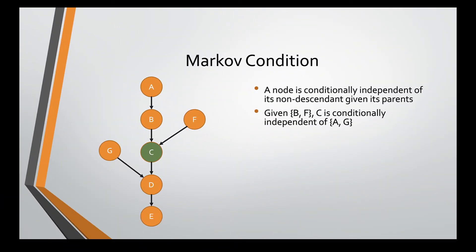The Markov condition states that each node is conditionally independent of its non-descendant given its parents. Here is a DAG of a Bayesian network again, and we're going to focus on the node C. According to the Markov condition, C is conditionally independent of A and G given B and F. B and F are C's parents, and A and G are C's non-descendants.